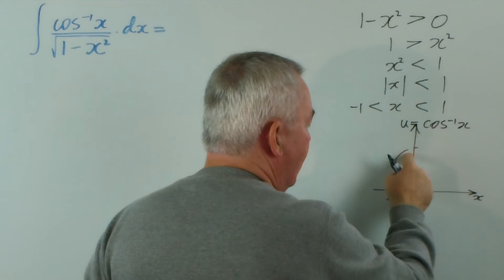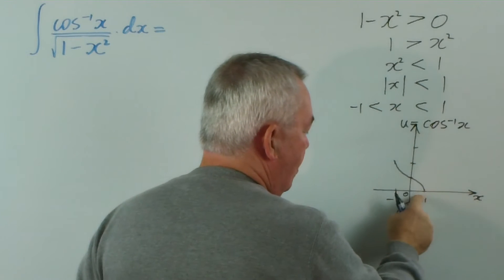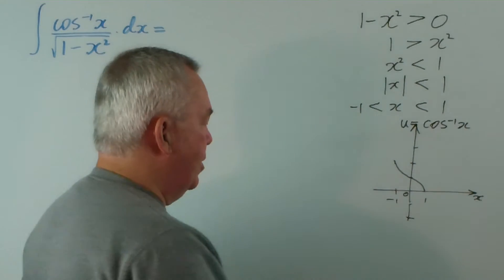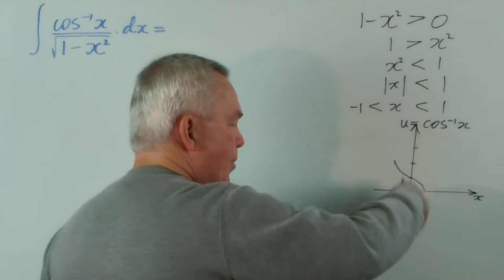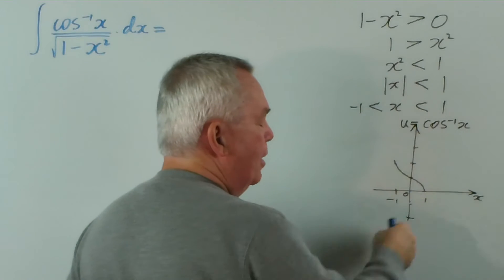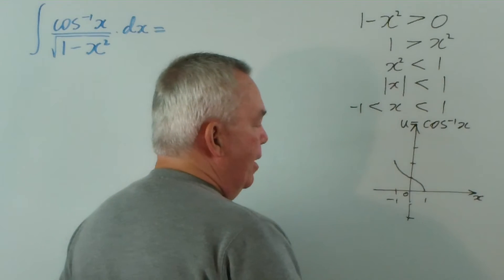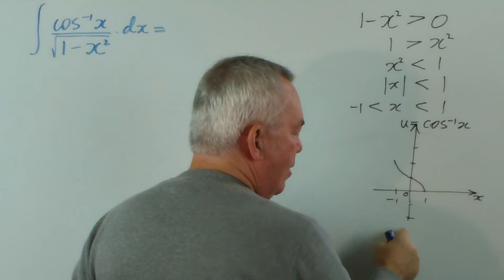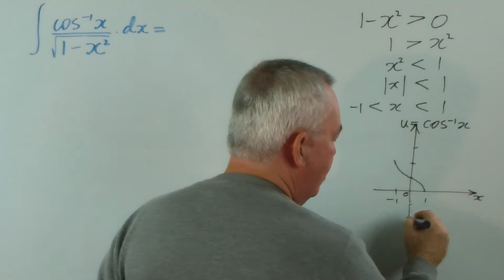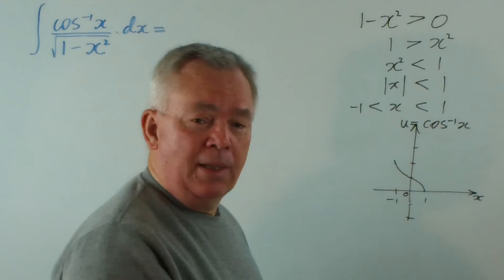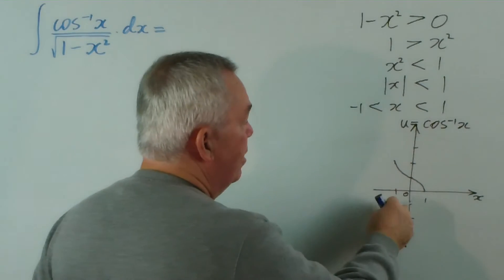Now in order to define it as a function, we accept only that part of it which allows us to pass the vertical line test, where there's only one value for every x value. And consequently, we can see that the domain for this is still between minus 1 and 1—actually negative 1 and 1 are accepted values here.